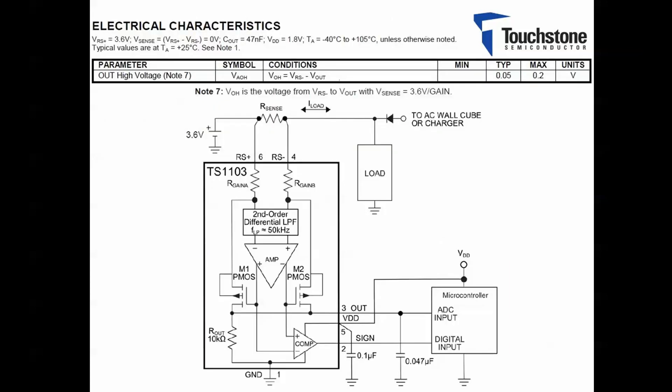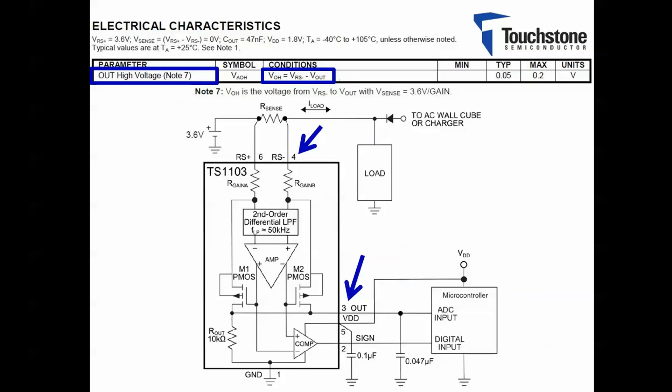Here we have a typical application circuit for the TS-1103 bi-directional current sense amplifier. As shown in the parameters conditioned from the EC table, the output high voltage can be obtained by measuring the voltage from the output at pin 3 to the load side of RS at pin 4.